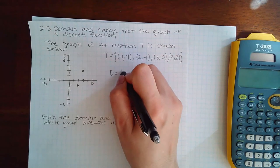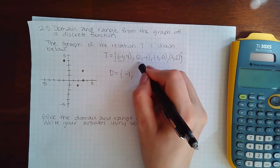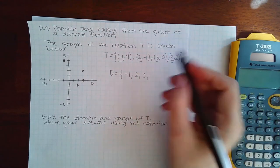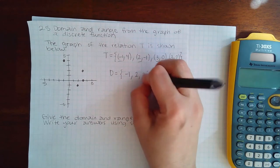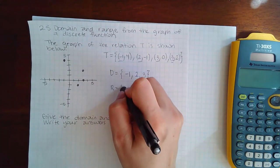the domain here would be the set of all the x-coordinates, so -1, 2, 3. And I don't need to write 3 twice, so that's the end of the list for the domain. And then the range would